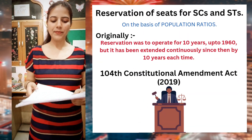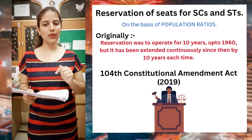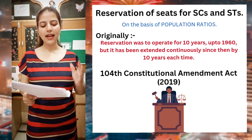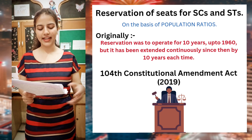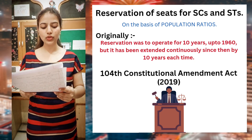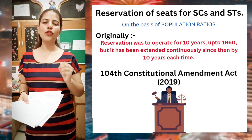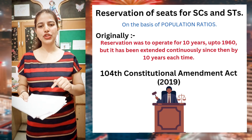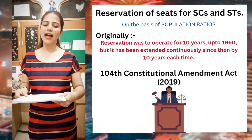Now we'll look at the topic of reservation of seats for Scheduled Castes and Scheduled Tribes. Their reservation is also on the basis of population ratio. Originally, the reservation was to operate for just 10 years, up to 1960. But it has been extended continuously since then by 10 years every time through repeated amendments. The latest amendment regarding reservation of seats was the 104th Constitutional Amendment Act, which also ceased the provision of nominating Anglo-Indians by the President but extended the reservation for Scheduled Castes and Scheduled Tribes again for the next 10 years.